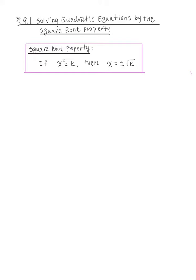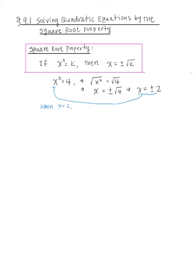I have to stress the minus part because a lot of students forget that portion. So suppose you have x squared equals to 4. Taking the square root on both sides, we're going to get x equals plus or minus square root of 4, which implies that x must be plus or minus 2. This makes sense because when x is 2, we have 2 squared which equals 4. Also, when x is negative 2, negative 2 squared equals 4 as well. Therefore, this property does make sense.